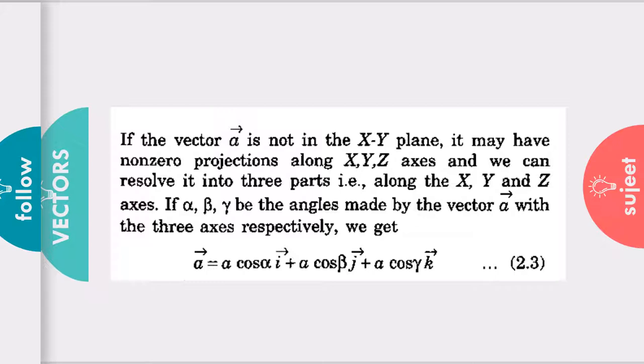Then what can we do? We can resolve the vector in all the three components: A cos alpha i, A cos beta j, A cos gamma k. With this we will get the required resolution.